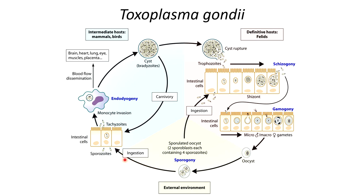The sporozoites will then be released into the intestinal cells of the intermediate host. Eventually they'll become tachyzoites once inside the intestinal cells. In a healthy individual, they'll just continue to reproduce within the intestinal cells as tachyzoites. But in an unhealthy individual, such as someone who is immunocompromised, they can begin to invade monocytes — immune cells — and replicate inside these cells via endodyogeny. Once they enter these immune cells, they spread through the blood and can reach the brain, heart, lungs, muscles, or the placenta in a pregnant woman — that's how they spread to the fetus.